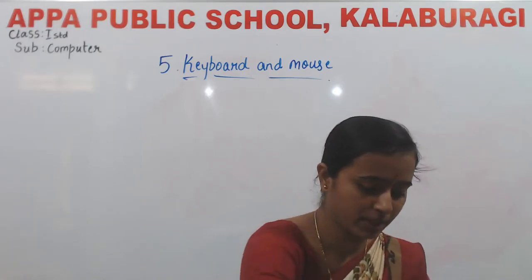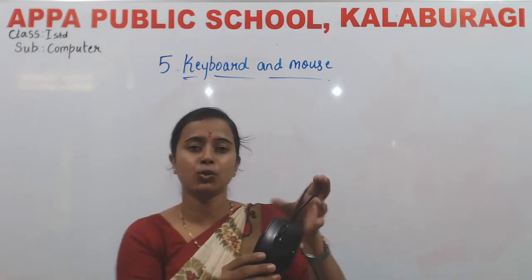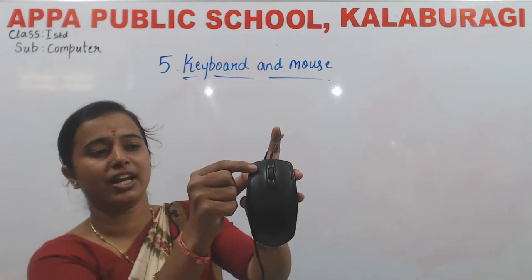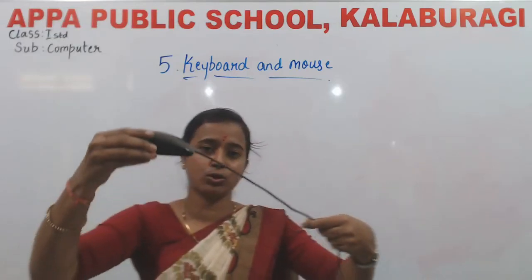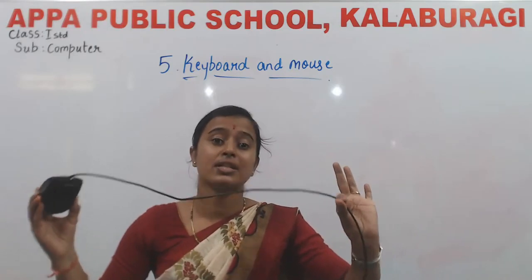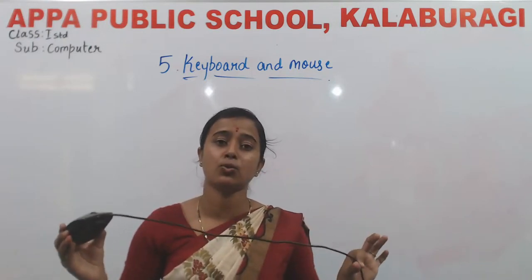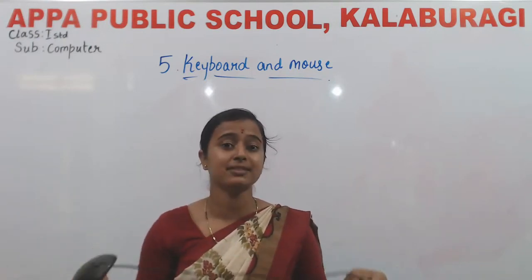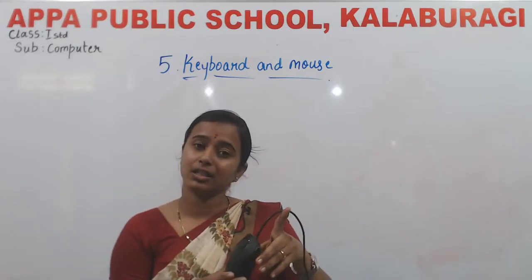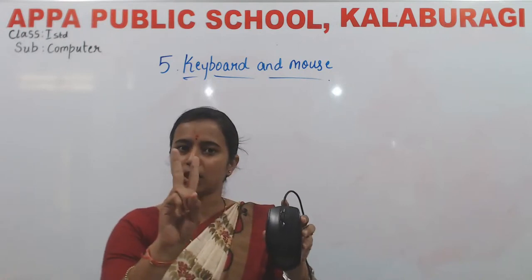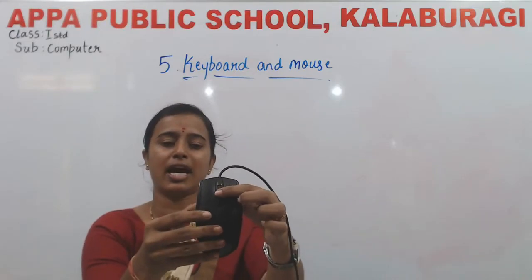I will show you the mouse. Mouse has totally two buttons — this is the left button and this is the right button. It also has one wire. This wire is connected to the CPU box. Printer, speaker, keyboard — all these devices are connected to the CPU box, which we can also call the cabinet. The mouse has a left button, a right button, and a scroll wheel.